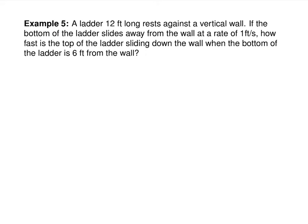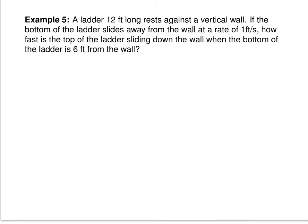This one involves the Pythagorean theorem. A ladder 12 feet long rests against a vertical wall. If the bottom of the ladder slides away from the wall at a rate of one foot per second, how fast is the top of the ladder sliding down the wall when the bottom is six feet from the wall? You have your wall, something triangle-like. The ladder is the hypotenuse — it's 12. The sides that have arrows on them are changing, so I'm going to give them variables — I'll call that one X and that one Y.